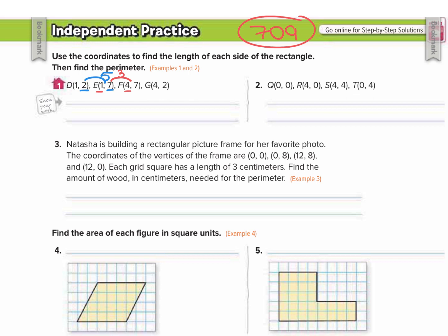For (4, 7) and (4, 2), the 4s didn't change but the 7 and 2 change, a distance of 5 units. Then from (4, 2) back to (1, 2), the 2s don't change but the 4 and 1 change. That's a distance of 3 units. So the rectangle has sides 5, 3, 5, and 3. To find the perimeter, you just add them all up: 5 plus 5 is 10, 3 plus 3 is 6, so 10 plus 6 gives a perimeter of 16.